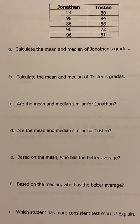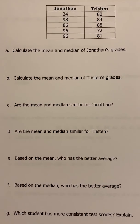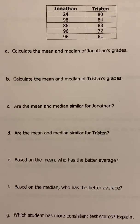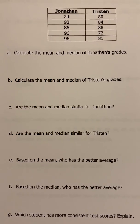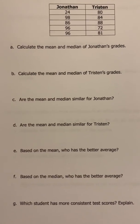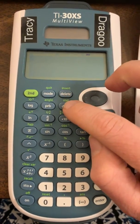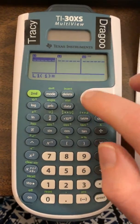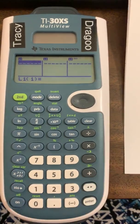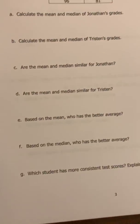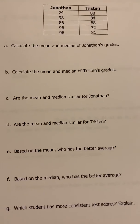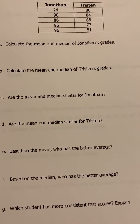We've got a table here with grades and we need to find the mean and median for both Jonathan and Tristan. We're going to come over to the calculator and hit the data button which gives you these tables. You can actually enter the values for both students in a column of the table.